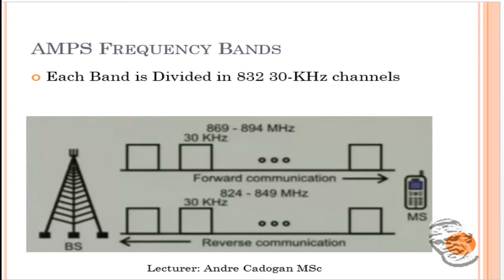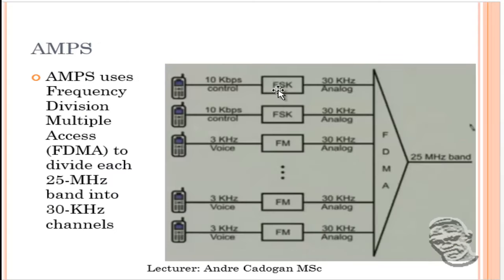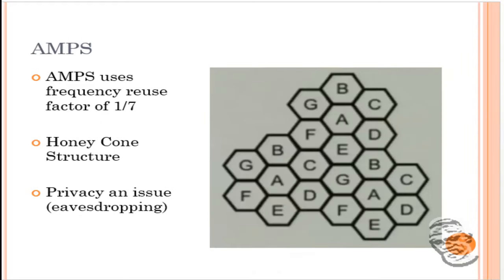FSK is used for digital information while FM modulation handles voice. The technology uses Frequency Division Multiple Access, or FDMA. AMPS uses a reuse factor of 1 over 7 in terms of the honeycomb cell structure. One major issue with 1G FM technology using AMPS was that privacy was a significant concern — electronic eavesdropping on cellular calls was possible due to the honeycomb structure. When we look at TDMA under the GSM architecture in the next lesson, we will see how this was corrected.